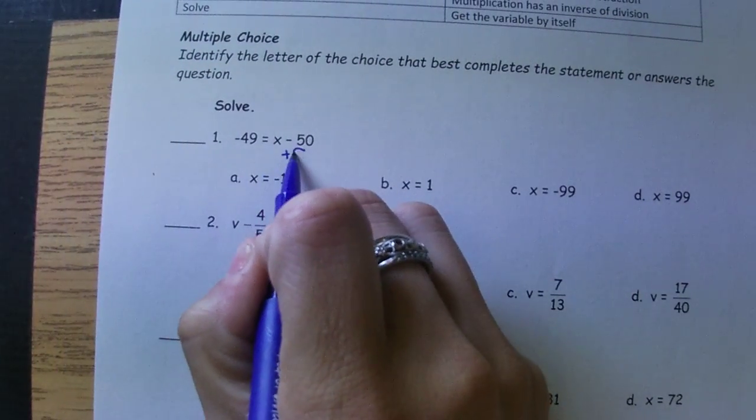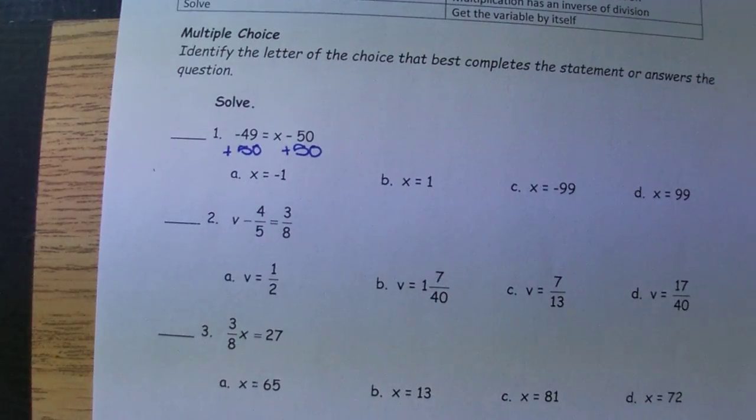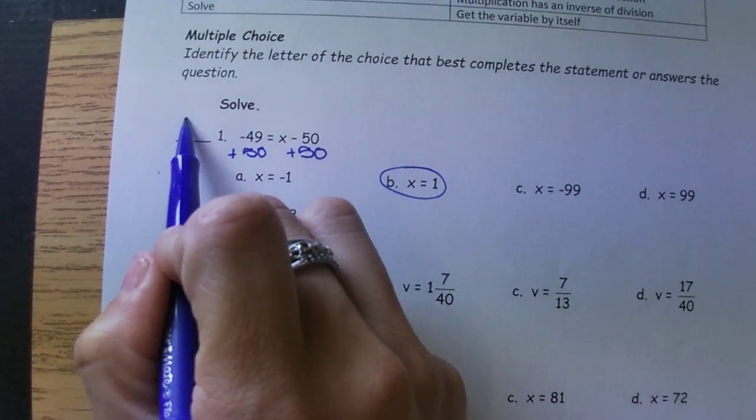Number one, we undo subtracting 50 by adding 50. Negative 49 plus 50 gives us 1, so we should have B.